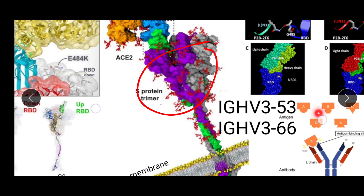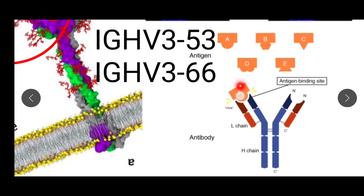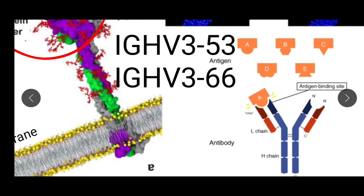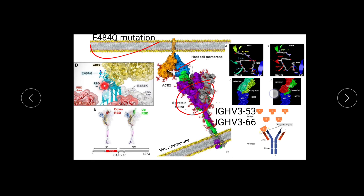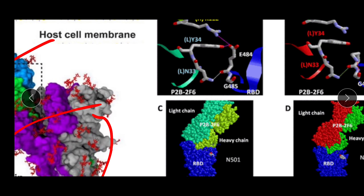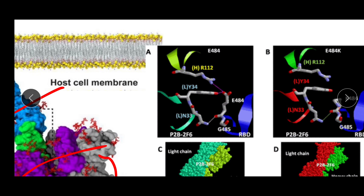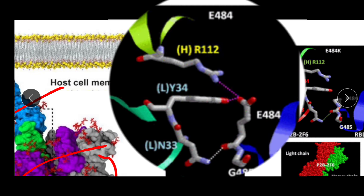Looking at the structure of an antibody, the blue portion is the heavy chain and the brown one is the light chain, with the variable region at the top. Different antibodies have different variable regions. These IGHV3-53 antibodies attach to the virus through a salt bridge. Most antibodies interact with antigen through hydrogen bonds and hydrophobic bonds, but here at E484 the antibody interacts with this amino acid via a salt bridge — a bond involving both a hydrogen bond and an ionic bond — which is much stronger than a hydrophobic bond.